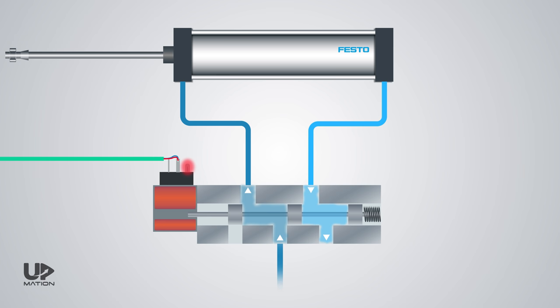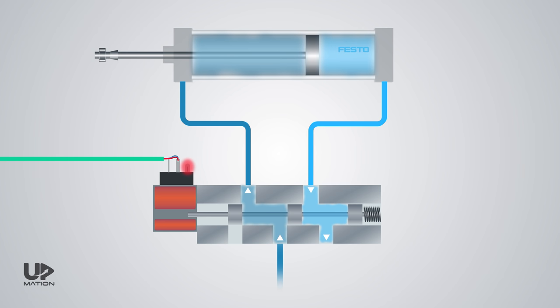As a result, you see the piston of the cylinder move to the right side. As long as the PLC's command remains on the solenoid, the position of the spool will remain still and the compressed air will cause the piston to keep its last position.